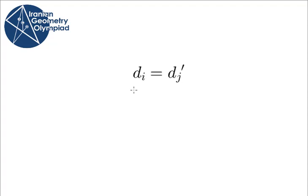So d_i equals d_j prime, meaning d1 prime, d2 prime to dm prime is just a permutation of d1, d2 to dm. Now let A, B, and C be three adjacent vertices in our n-gon.